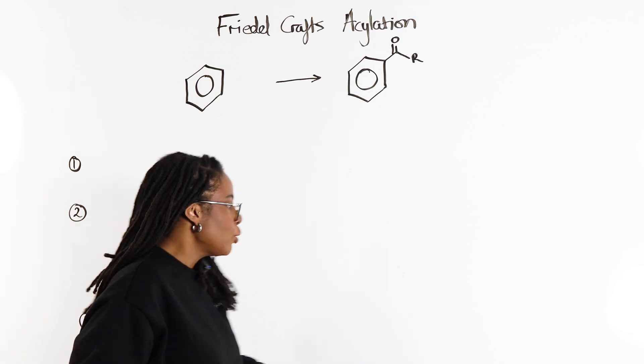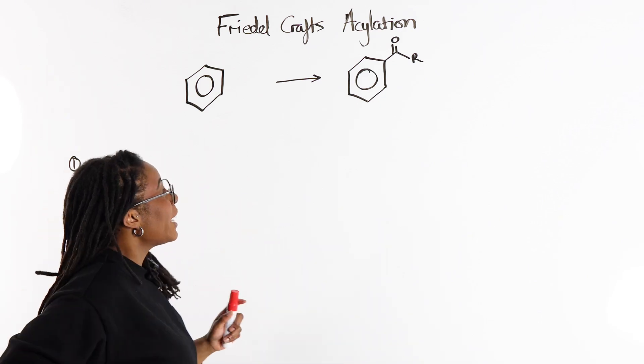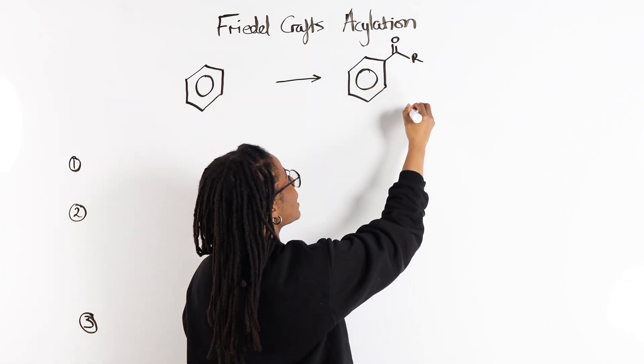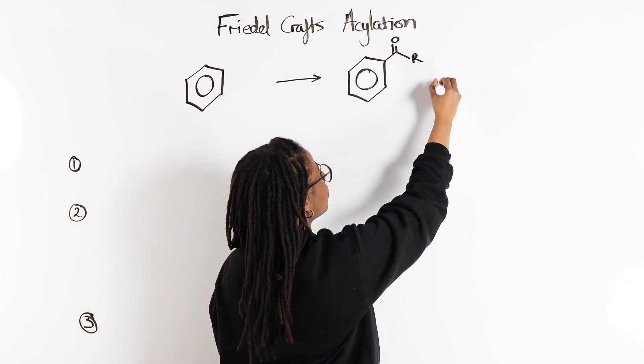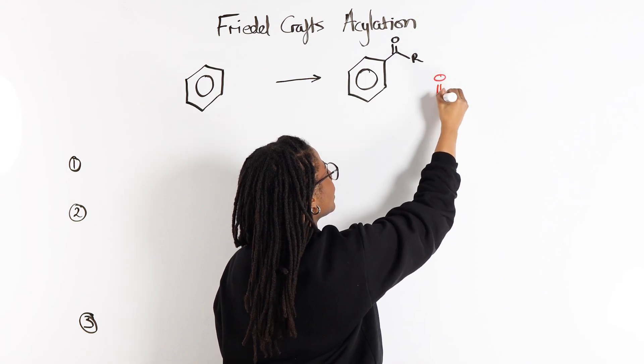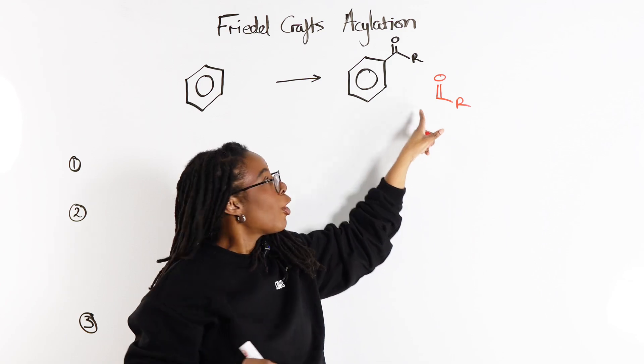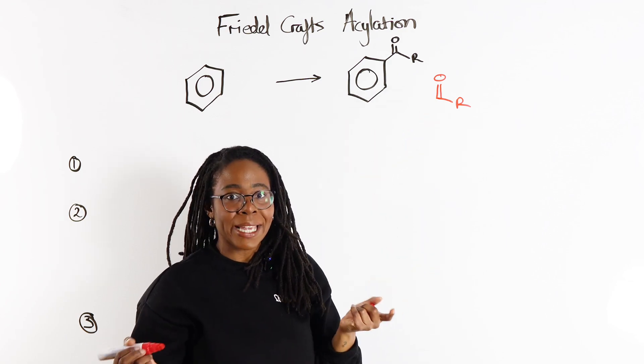To spot what the electrophile is, all we need to look at really is where this part came from. So this clearly came from a benzene ring and something that looks like this. And where are we going to get that from? Well, that's going to come from our acyl chloride.